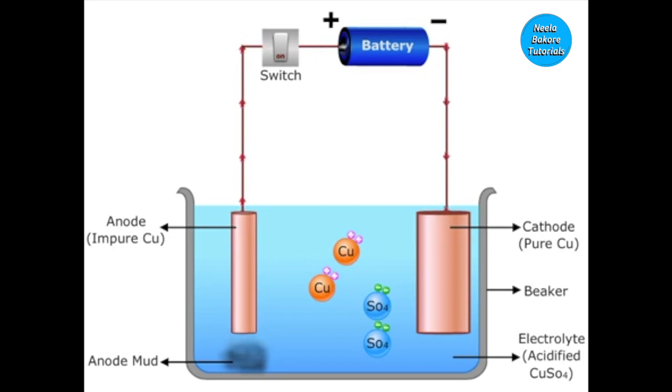Copper which is deposited on the cathode is pure copper and can be used for making electric wires, cables, or utensils.